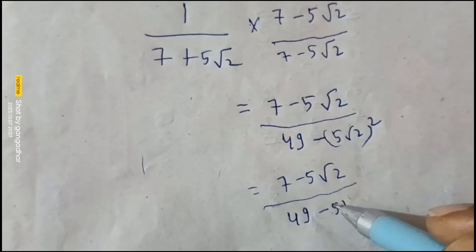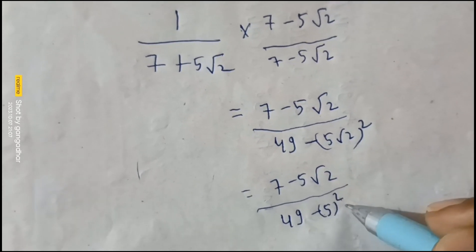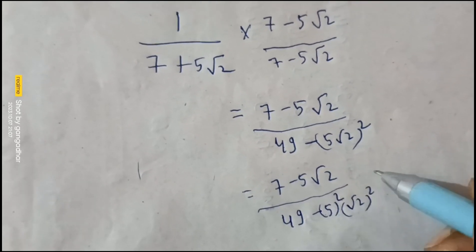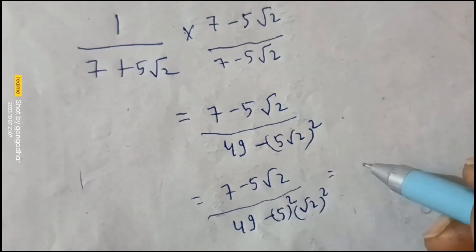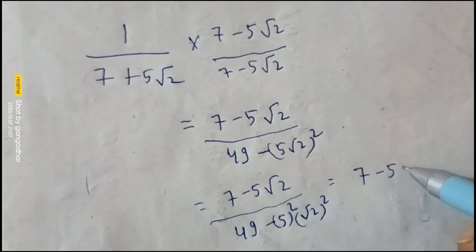Minus pi squared, root two whole square. Seven minus pi root two.